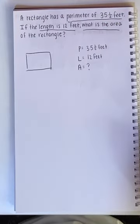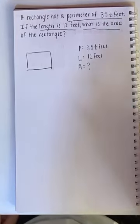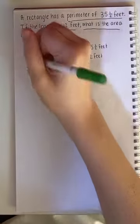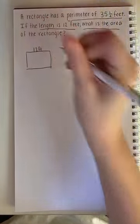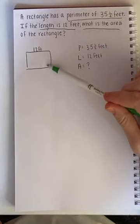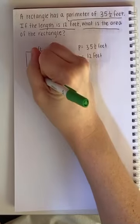So let's use what we already know to solve this problem. I know my length is 12 feet. So here's the length 12 feet. If this length is 12 feet, that means this length is also 12 feet because it's a rectangle.